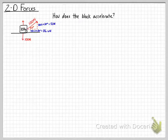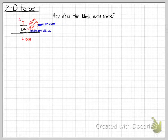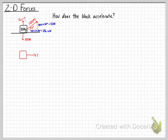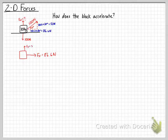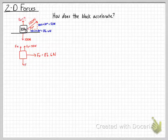This object is on the ground. Normally when we have an object on the ground, the weight and the normal force are equal and opposite. In this case, that is not entirely true — we don't know the normal force here, because the object is being pulled up by 50 newtons. So we redraw the diagram with the horizontal tension at 86.6 newtons, the vertical tension at 50 newtons, the weight down at 100 newtons, and the normal force unknown.